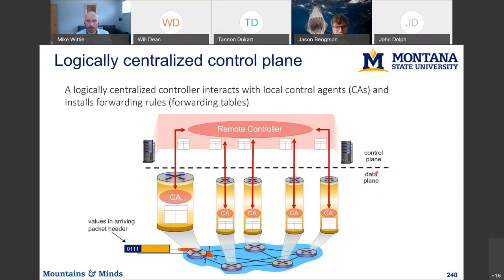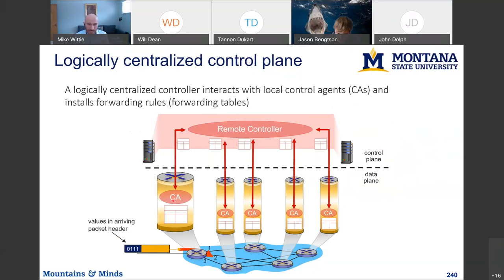This is where we will have a logically centralized controller that replaces the routing algorithm in coordinating the different routers or switches in this network. Packets still arrive, and a router will have a local control agent which interacts with the remote controller to ask: what should I do with this packet? Instead of the controller pushing decisions a priori into these switches, for each arriving packet the switch can ask, 'I don't know what to do with it — what do you think?' The remote controller can respond, and then the forwarding rule is installed based on the traffic arriving at the switch.